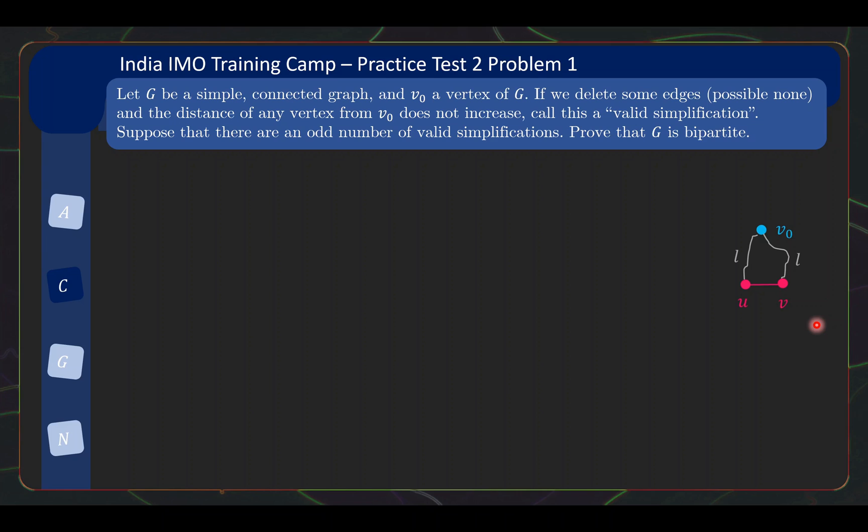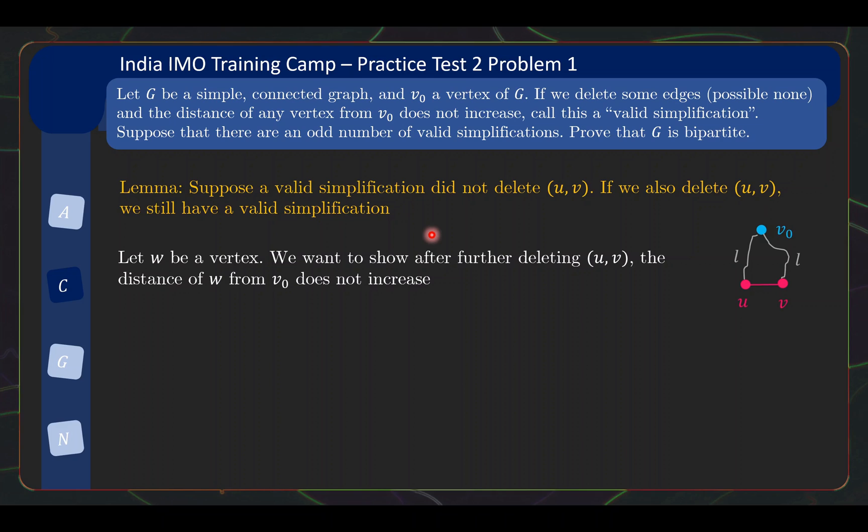Now we prove the second maybe statement, which is that we can add or delete UV to convert between valid simplifications. Let's prove one of the directions. This is actually the slightly harder direction. So we suppose a valid simplification did not delete UV. If we also delete UV, we still have a valid simplification. The proof of this? Well, just follow your notes. What is the definition of valid simplification? We have any vertex W. We want to show that after we further delete UV, the distance of W from V0 does not increase. So, after the first round of valid simplification, we also delete UV, the distance of W does not increase.